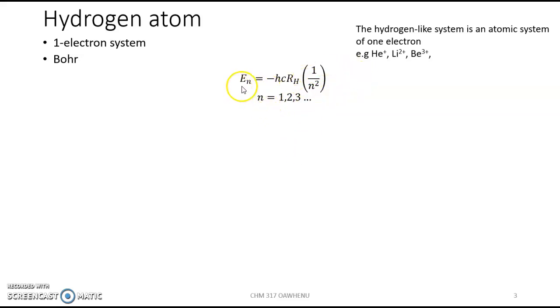The energy of the electrons jump from one energy level to another energy level, and each energy level is described by the equation hcRH, where h is Planck's constant, c is speed of light, and RH is Rydberg constant, multiplied by 1 over n squared, where n takes the values 1, 2, 3.